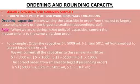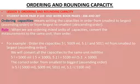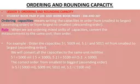Write the answer using the original units given in the question. The correct ascending order is: 5 liters (smallest), then 5009 milliliter, then 5011 milliliter, then 5.1 liter last — because 5.1 liter equals 5100 milliliter, which is the largest of the four capacities. That is how you order capacities.